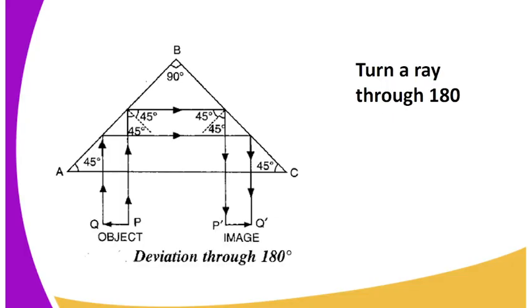To turn a ray of light through 180 degrees, as you can see, the ray meets the prism normally and passes on undeviated. It makes an angle of 45 degrees with the normal. The ray makes an angle of 45 degrees with the normal.